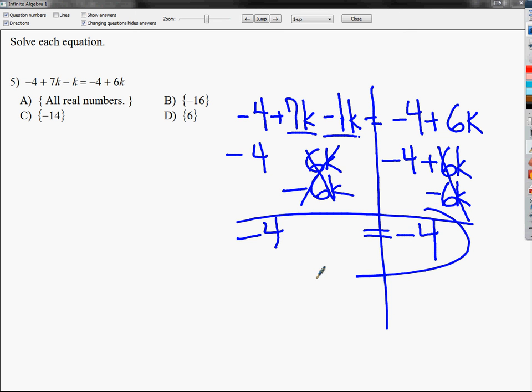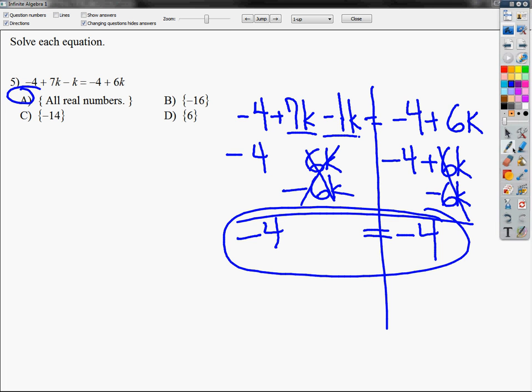Make that comparison statement right there. It's either going to be a no solution or an identity question and all real numbers by the way is a choice means identity. So I'm going to pick A here as the choice. And then I'm going to just check to see that I got the answer right. All real numbers, perfect.